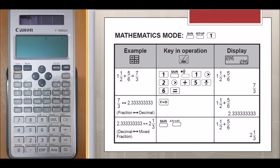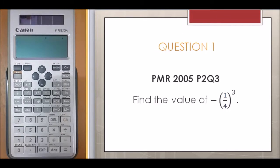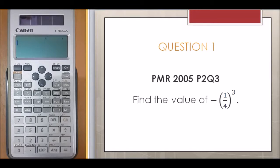Let me show you one question from PMR, year 2005, paper 2, question 3. Find the value of negative 1 over 4 in bracket, cube.